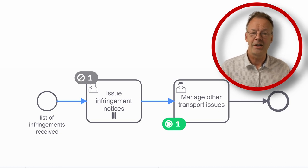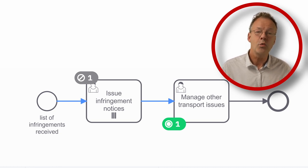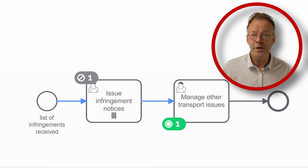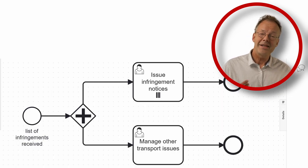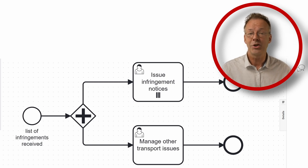If we really want to manage other transport issues and not wait for the issuing of the infringement notices, what can we do? We can simply use a parallel gateway as shown here.